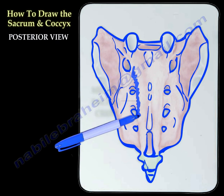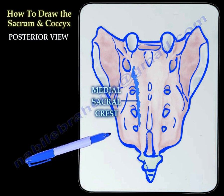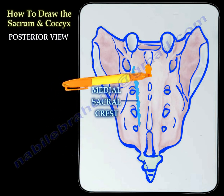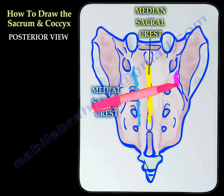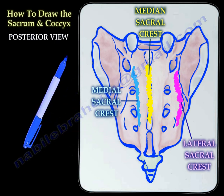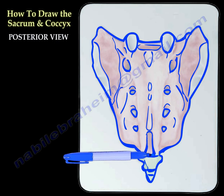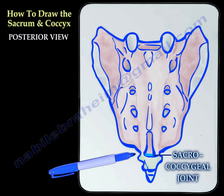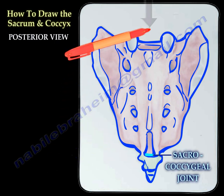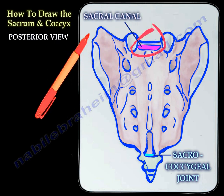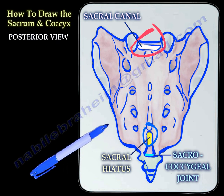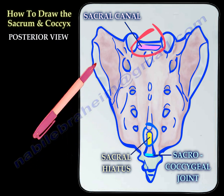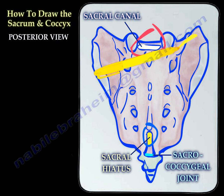Here you can see the medial sacral crest, the median sacral crest, and the lateral sacral crest. We also have the sacro-coccygeal joint, the sacral canal, the sacral hiatus, and the sacral tuberosity or the ala of the sacrum.